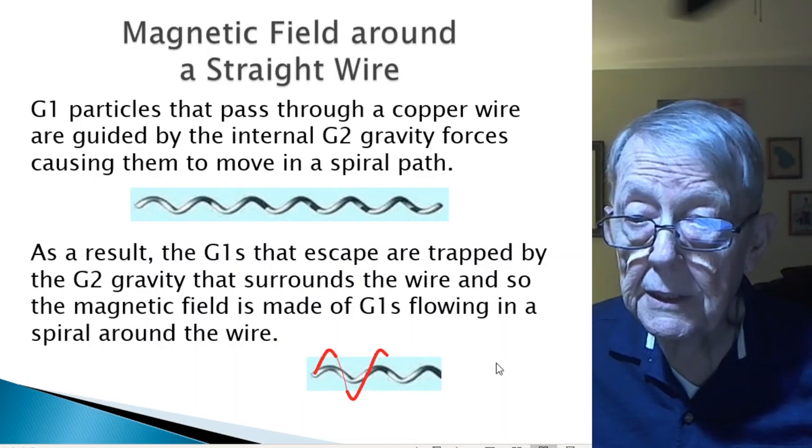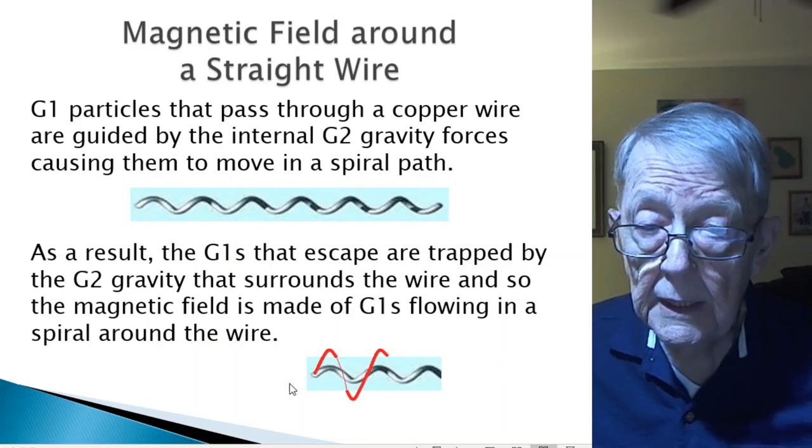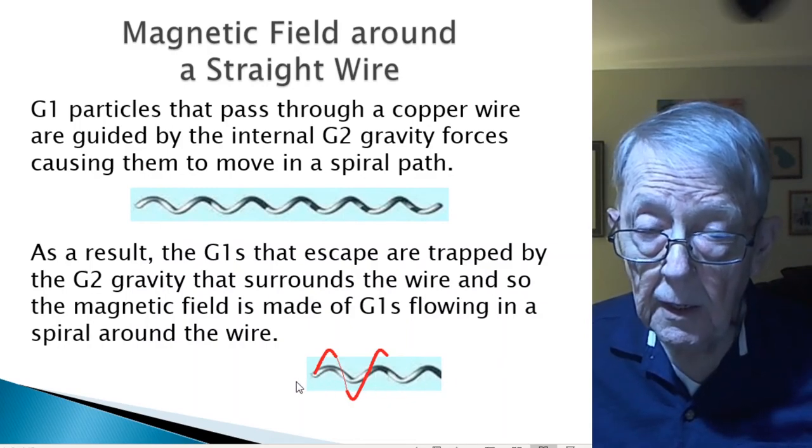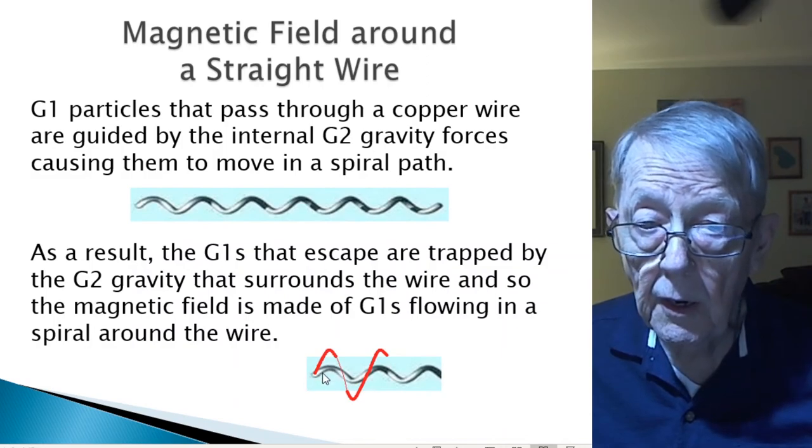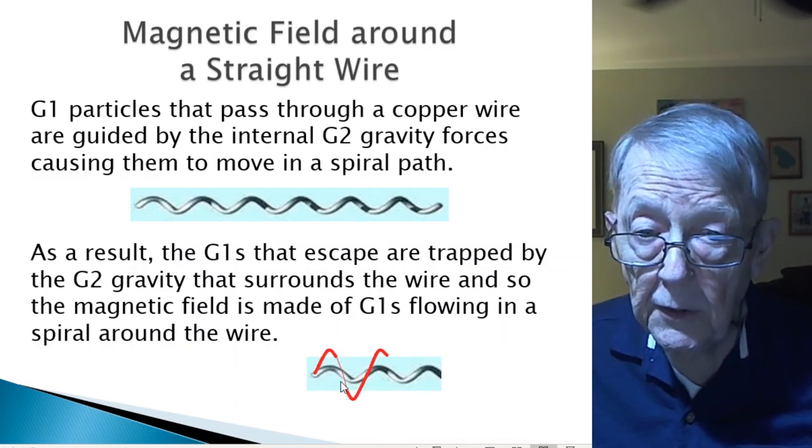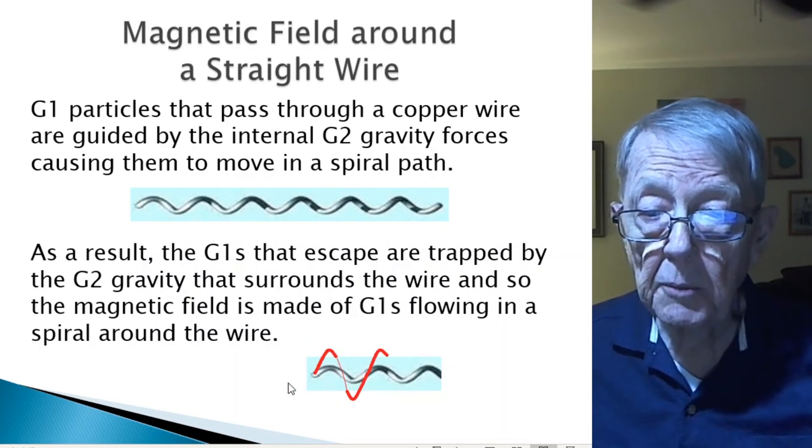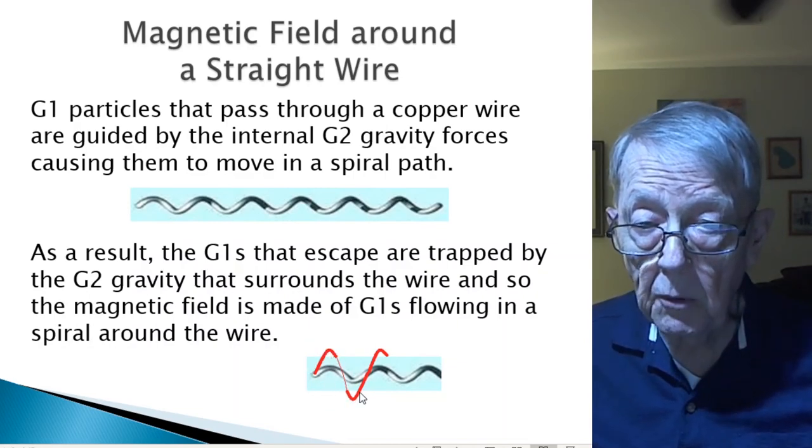A little added diagram here shows red G1s flowing over the top and back, behind the wire, and then down and forward, and then up and around and back again. Yes, they're flowing at speed C to the right. And yes, it's a spiral. They don't stay there in circles. They move in a spiral motion.